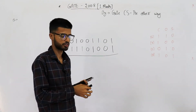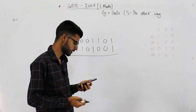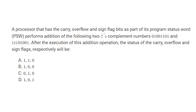Welcome. Let's solve one more question from the GATE 2008 exam. The statement reads: a processor that has carry, overflow, and sign flag bits as part of its program status word performs addition of the following two's complement numbers. After the execution of this addition operation, the status of carry, overflow, and sign flags respectively will be?